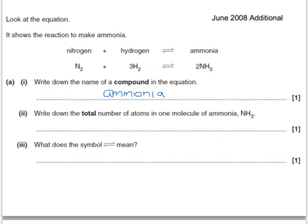The number of atoms in one molecule of ammonia, well there's one nitrogen and there's three hydrogens, so that makes four atoms. And this symbol means it is a reversible reaction.